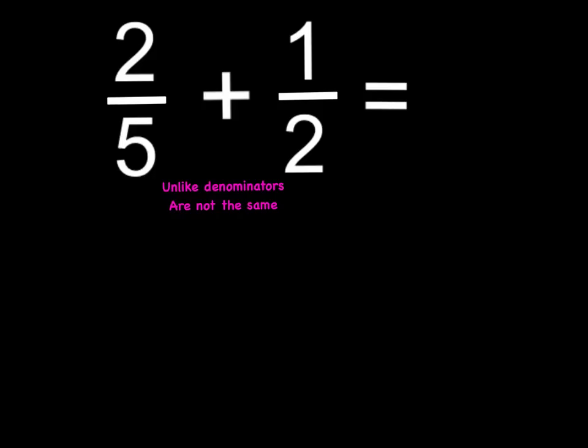When you have unlike denominators, it means the denominators are not the same. In this example, we have a denominator of 5 and a denominator of 2. When you have unlike denominators, it gets a little trickier. You must find the common denominator. To find the common denominator, you must find which number both denominators can be divided into.